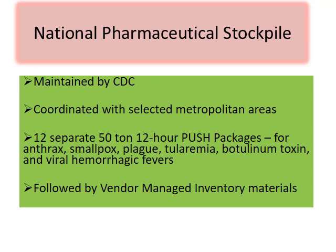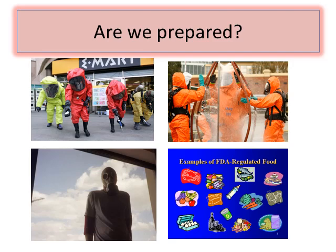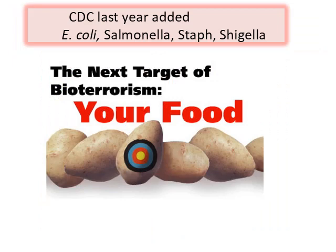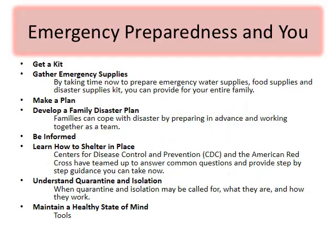Keep in mind that there is a national pharmaceutical stockpile maintained by CDC. There are 12 separate 50-ton push packages that can be supplied within 12 hours to treat anthrax, smallpox, plague, tularemia, botulinum toxin, and viral hemorrhagic fever. Pharmacies also work with vendor-managed inventory materials. Are we really prepared for what may come? We have to stay informed, because CDC is now talking about new targets — E. coli, Salmonella, Staph, and Shigella — meaning the next bioterrorism target may be the food supply.